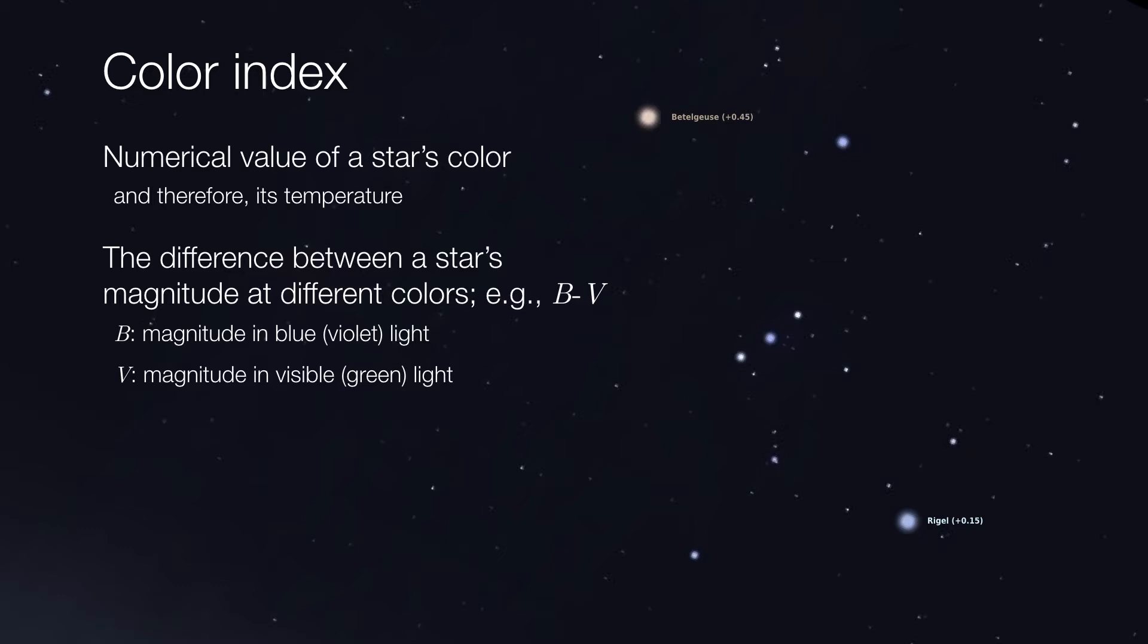So let's take our two stars here. We have Betelgeuse and Rigel. You'll notice that they both have very low magnitudes, which means they're very bright in the sky. Rigel is a little bit brighter, however.